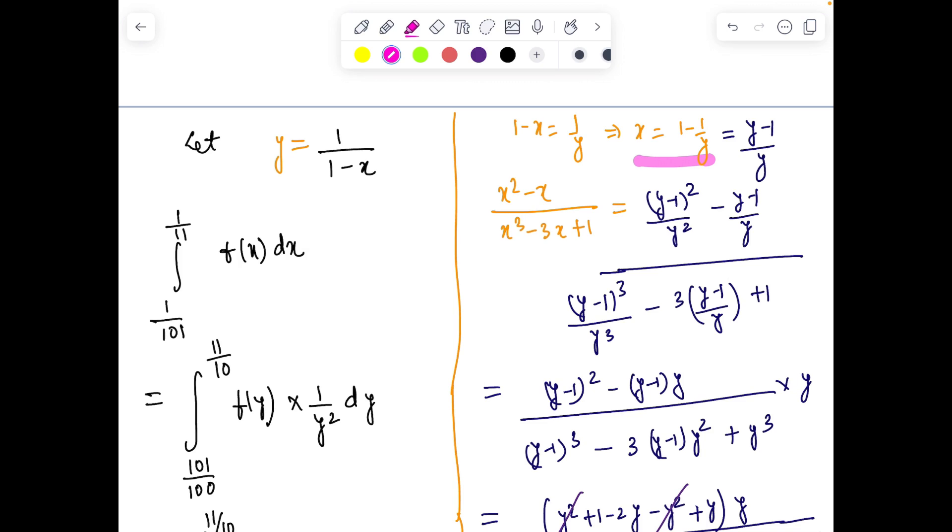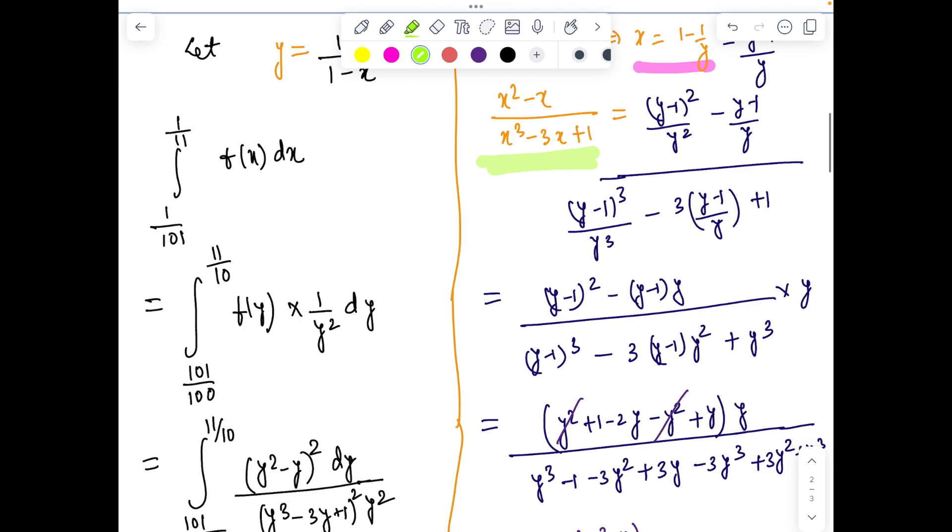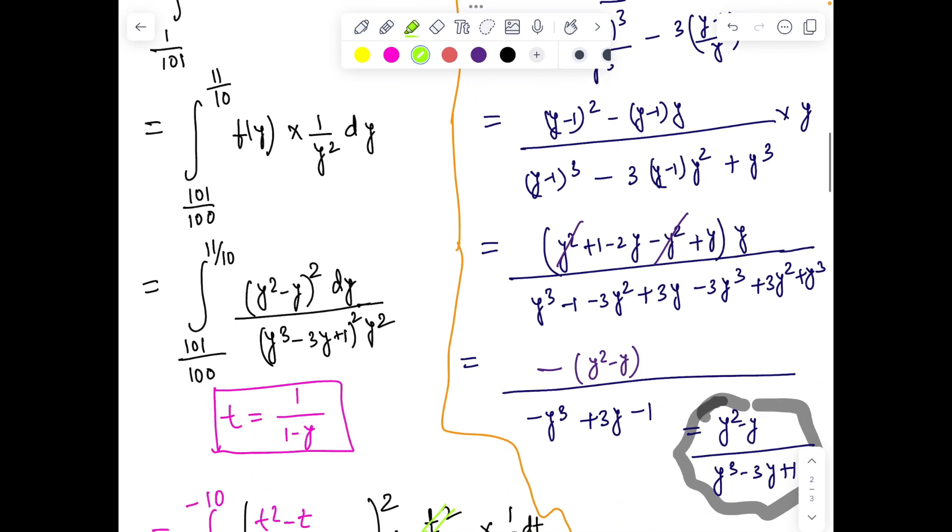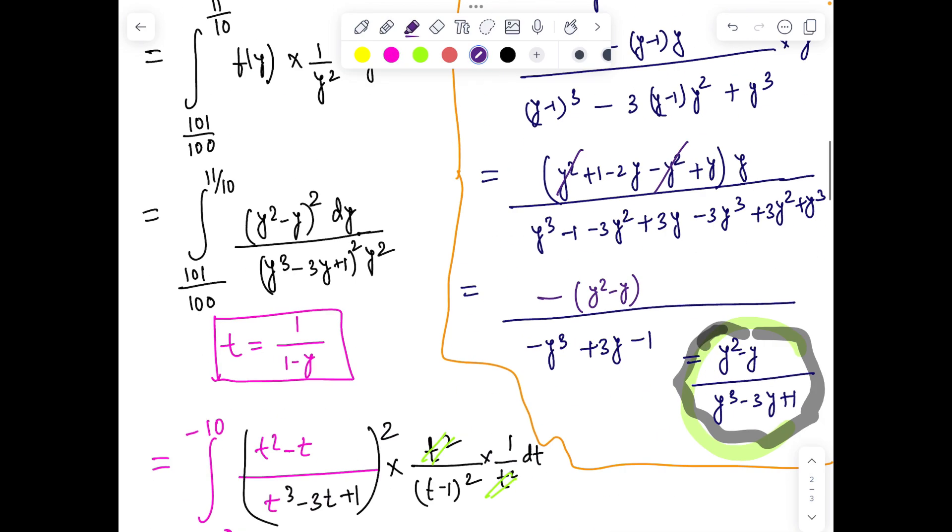1 - x becomes 1/y, so x = 1 - 1/y. Now that converts (x² - x)/(x³ - 3x + 1) back to the new integrand. If you put in all the calculation I've shown, you'll get back to the same thing—and that's surprisingly beautiful. Plugging in x = 1/(1-y) just changes the entire structure into the same integrand.